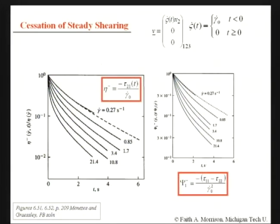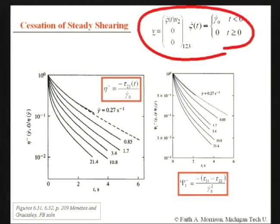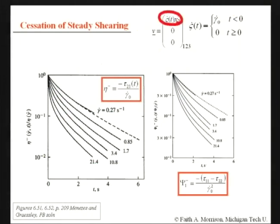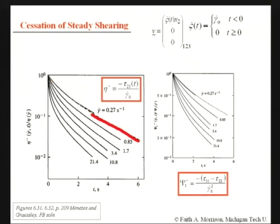Cessation of steady shearing: we impose shear flow, shear the material, and then at time t equals zero we stop. The stress relaxes and we divide by the original shear rate to get these curves, which are a function of shear rate. For the first normal stress difference we get similar curves with a slightly different relaxation behavior.